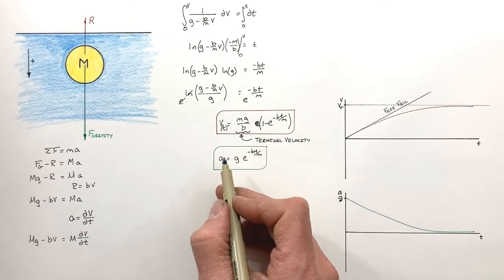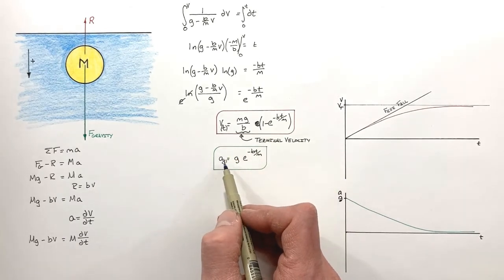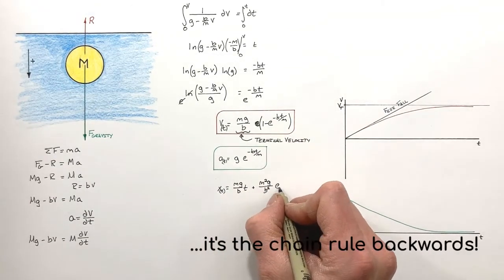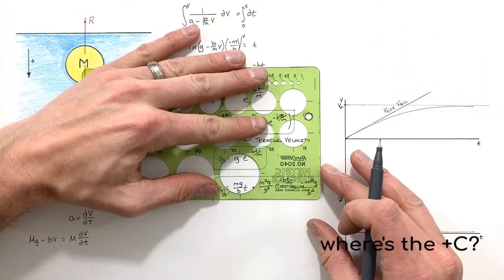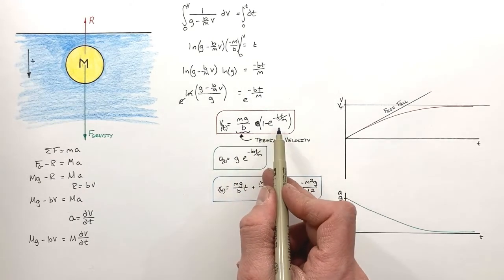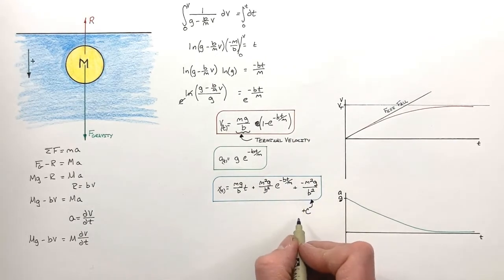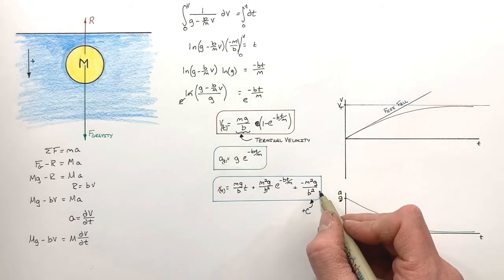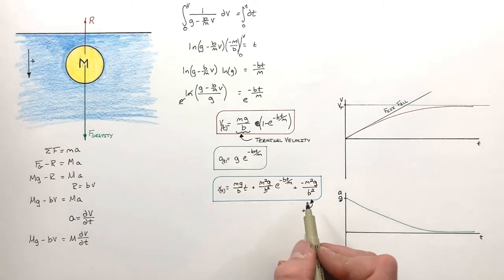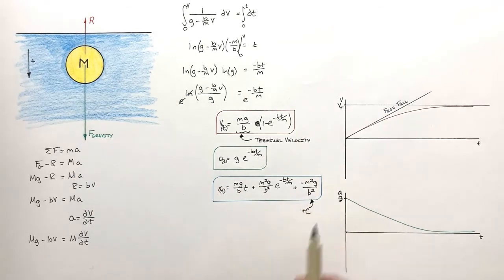Finally, let's look at position versus time. Rather than taking the derivative as we did to get acceleration, we integrate the velocity function to get position as a function of time. When integrating V(t) to get position, it's easiest to distribute into the parentheses first — and you have to be careful of the chain rule. The constant of integration is set so that position equals zero at time zero, so really we're looking at displacement. Let's graph this to get a better picture.